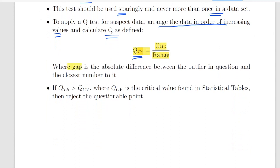The gap is the absolute difference between the outlier in question and the closest number to it. If the outlier is either the minimum or maximum value, the gap is the absolute distance to the next value, which would be either the second lowest or second highest. If the test statistic Q_TS is greater than the critical value Q_CV found in statistical tables, then we reject the questionable observation.